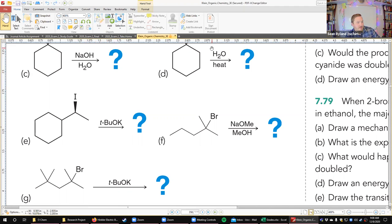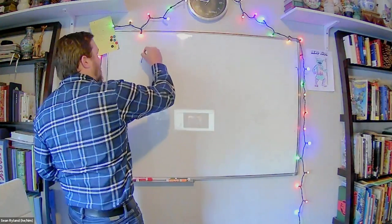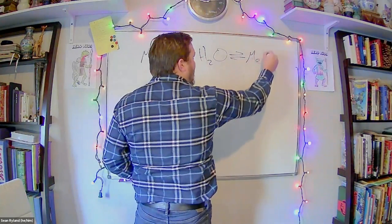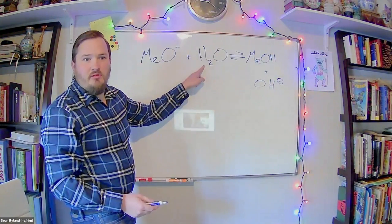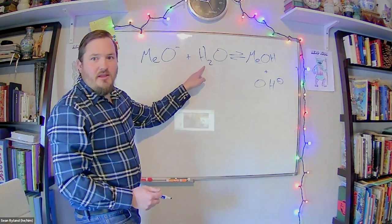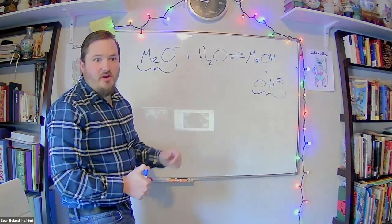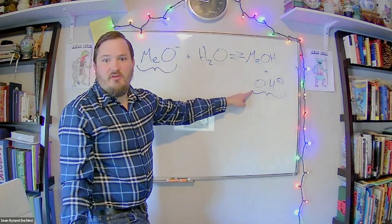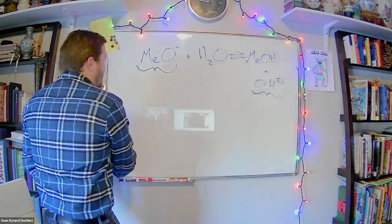Consider what would happen if we used methoxide in water: we'd have a side equilibrium reaction where methoxide plus water gives methanol and hydroxide — methoxide pulls the hydrogen off water. If you have significant amounts of both strong bases and that equilibrium is ongoing, either could be a nucleophile, and you'd get a mixture of products — one where hydroxide is the nucleophile and one where methoxide is.